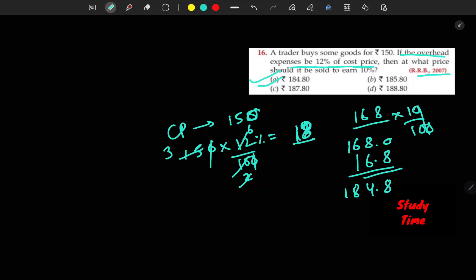So, 18 here. And here we have... 16.8. 16.8 here is profit.